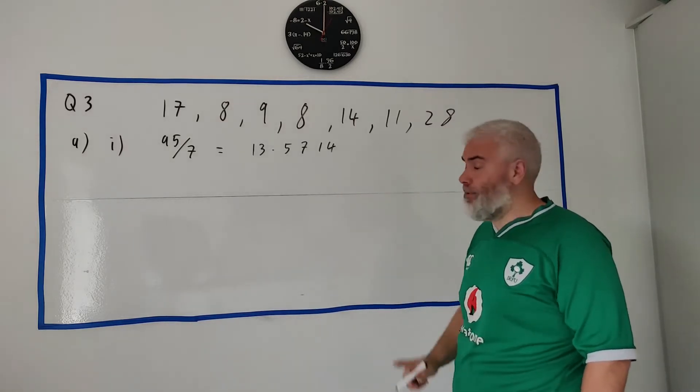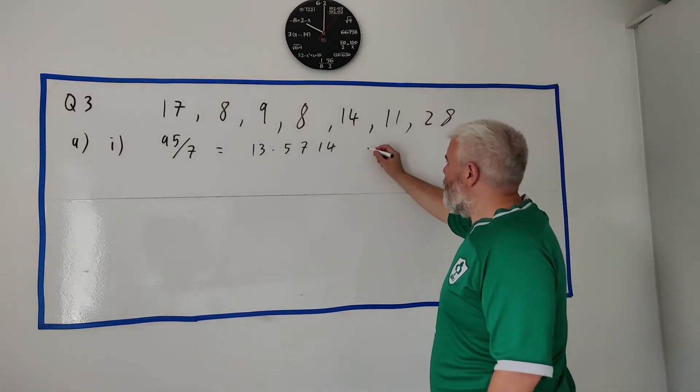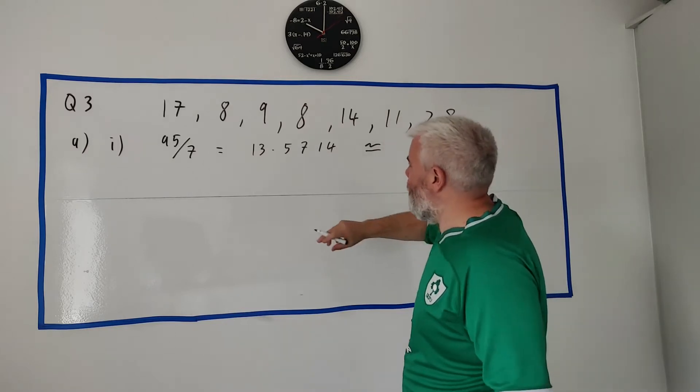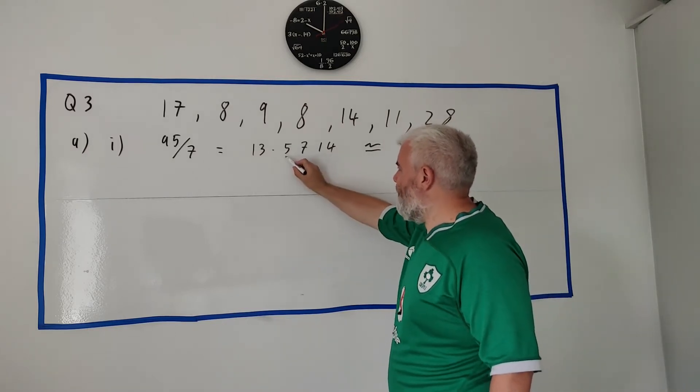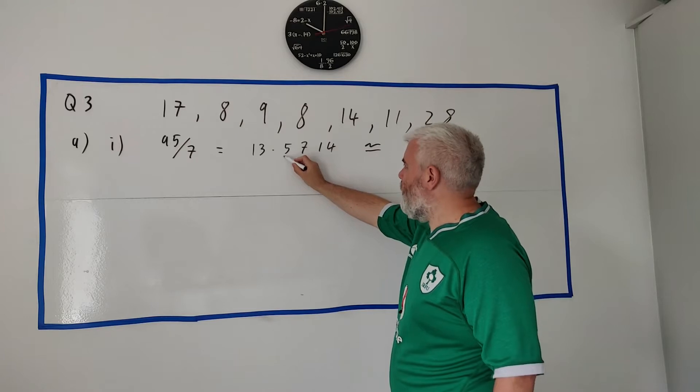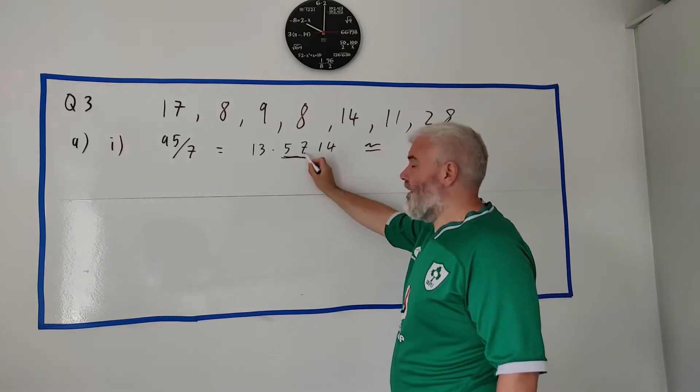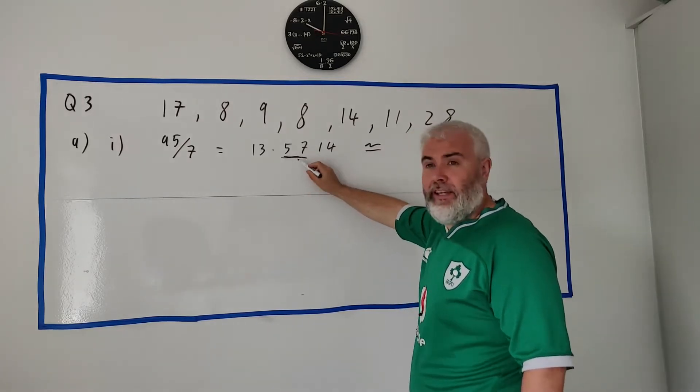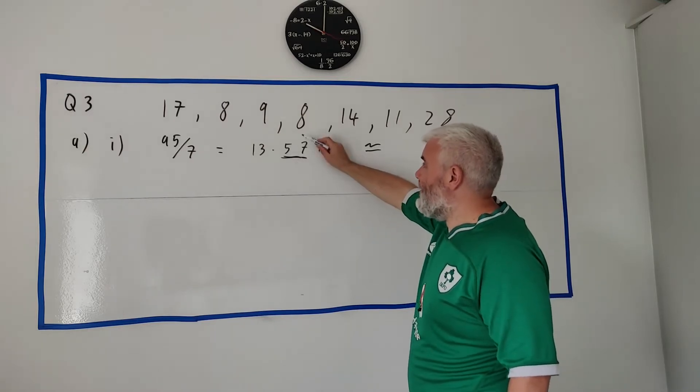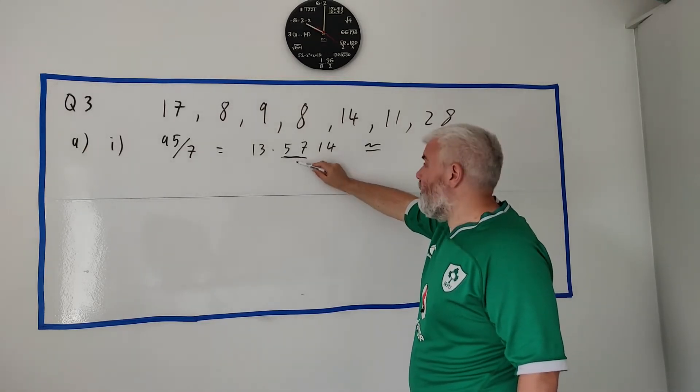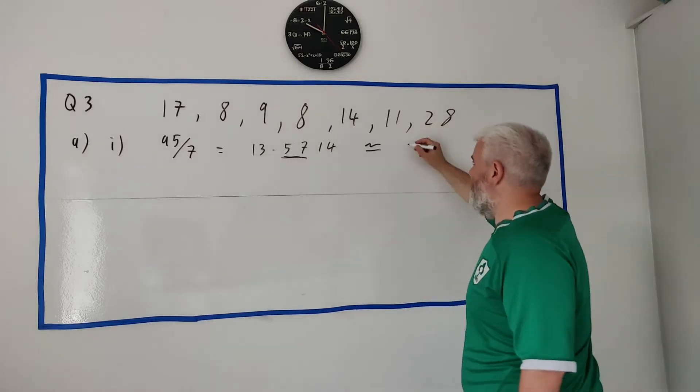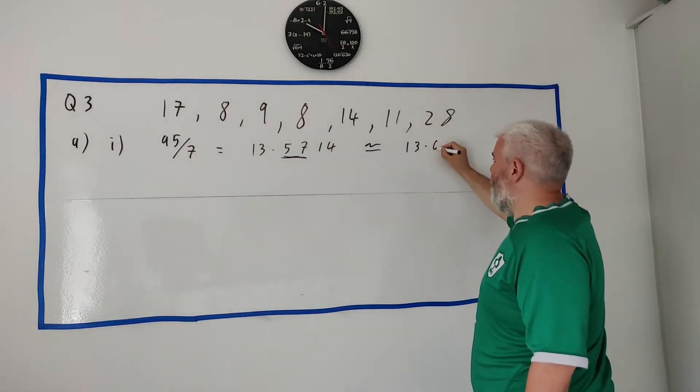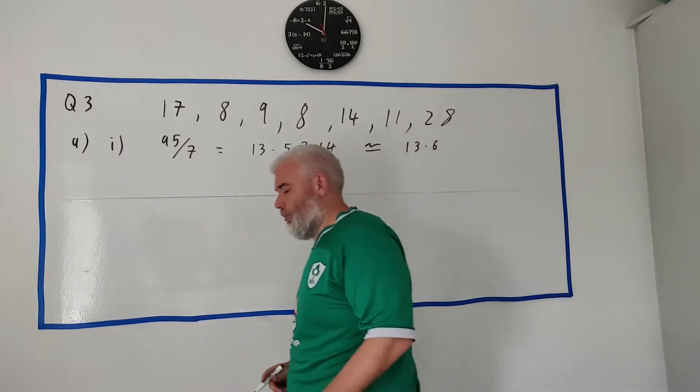Put that in a calculator and you get 13.5714. The exam asks you to give this to one decimal place, so I will say it's approximately equal to - one decimal place - this five here. I look at the next number, seven. 57, is this closer to 60 or to 50? Well it's closer to 60, so we'll put in 13.6. That's to one decimal place.